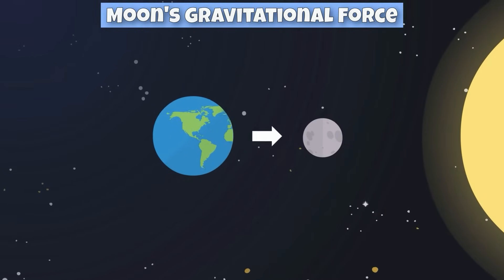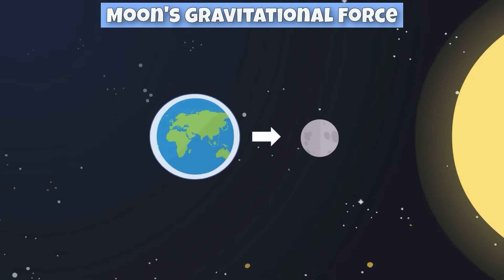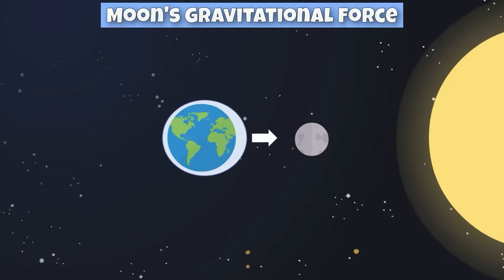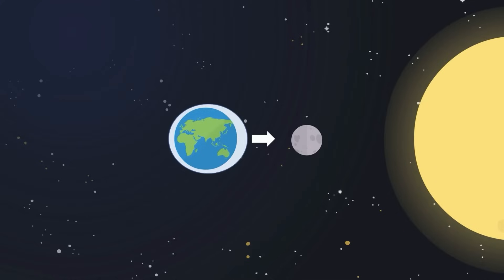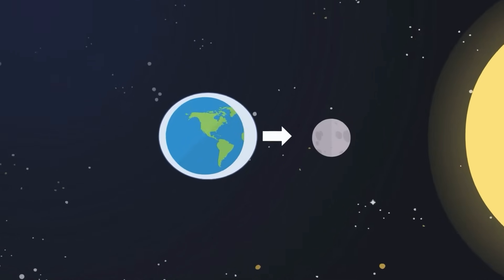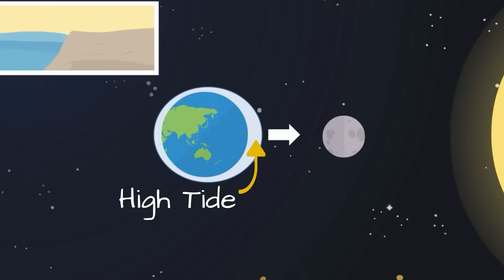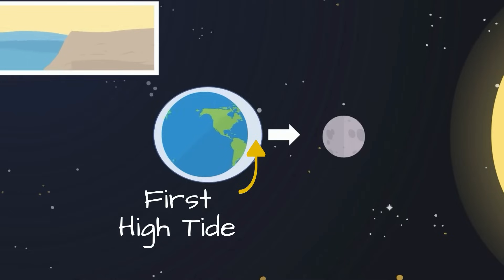As the Earth rotates on its axis, it faces the moon at certain times, and the moon's gravitational force pulls on the Earth. This force causes a water bulge in the direction of the moon. This tidal bulge causes sea levels to rise and is called a high tide. Each day, the Earth rotates into this bulge of water, which is also known as the first high tide.